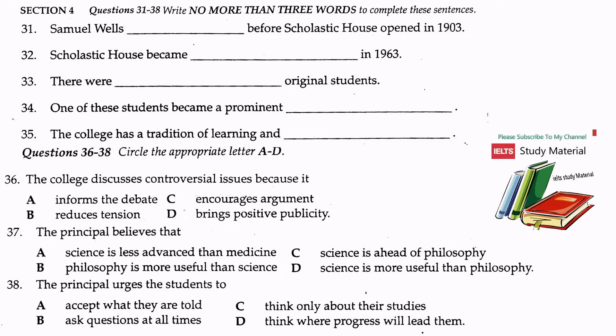At that time Scholastic House accepted only male students, although it has been co-educational since 1963. Nine of these foundation students went on to lead illustrious lives. The only exception died tragically on his way home to Sarawak, having recently graduated with an honors degree in law. Three of the nine became political leaders, three became doctors, and perhaps the most famous graduate became a university teacher responsible for the introduction of modern teacher training methods in his country.